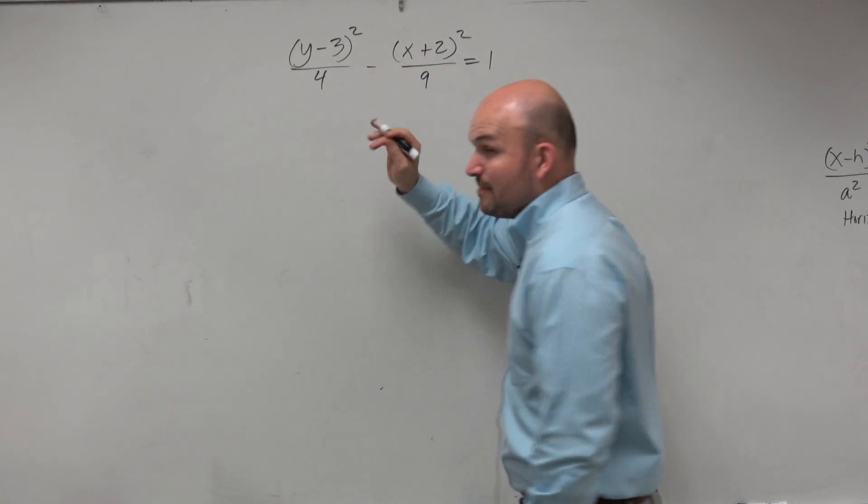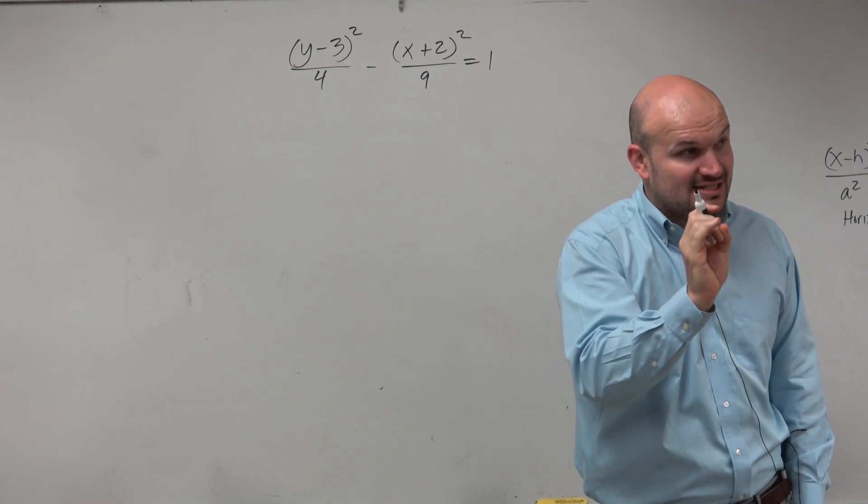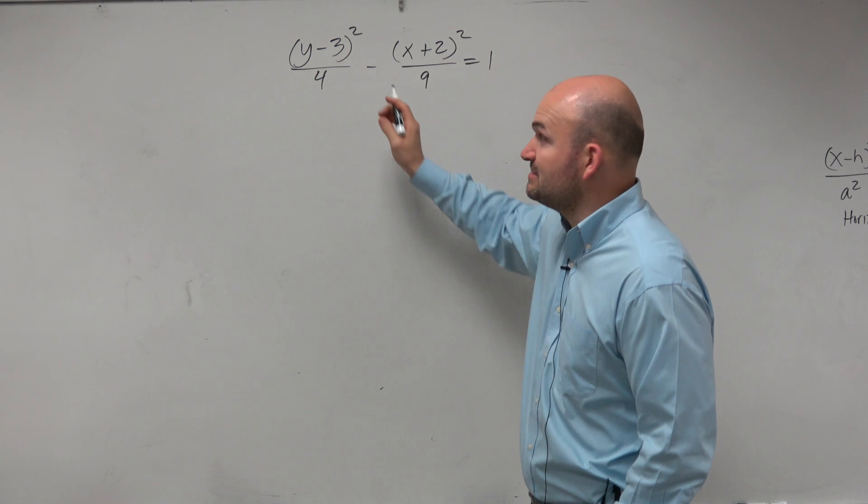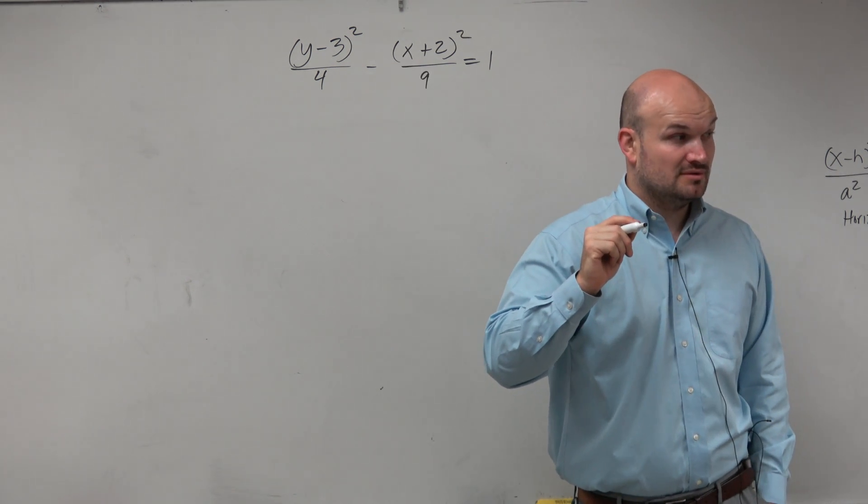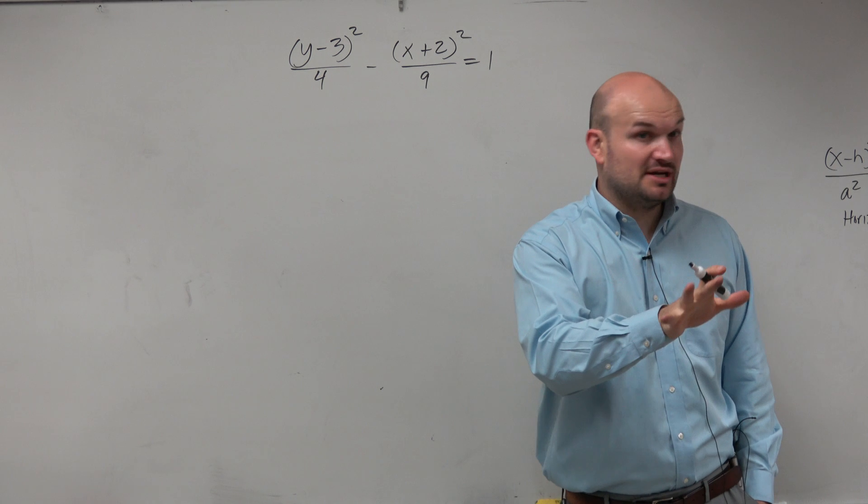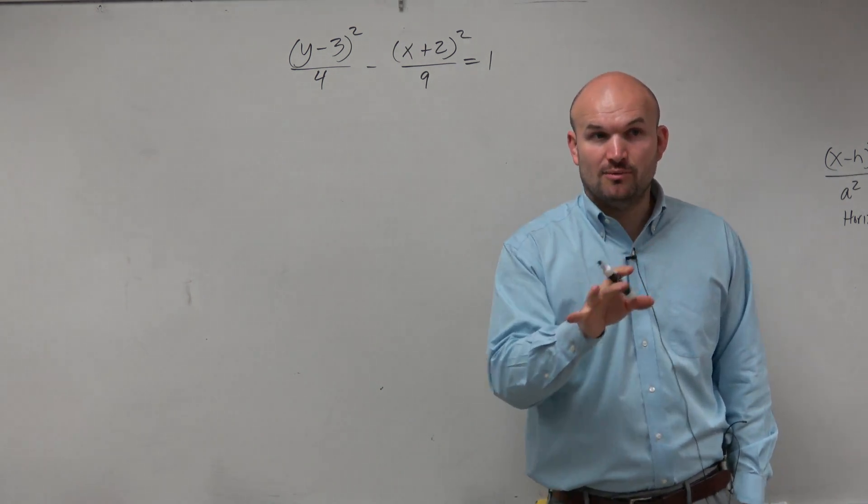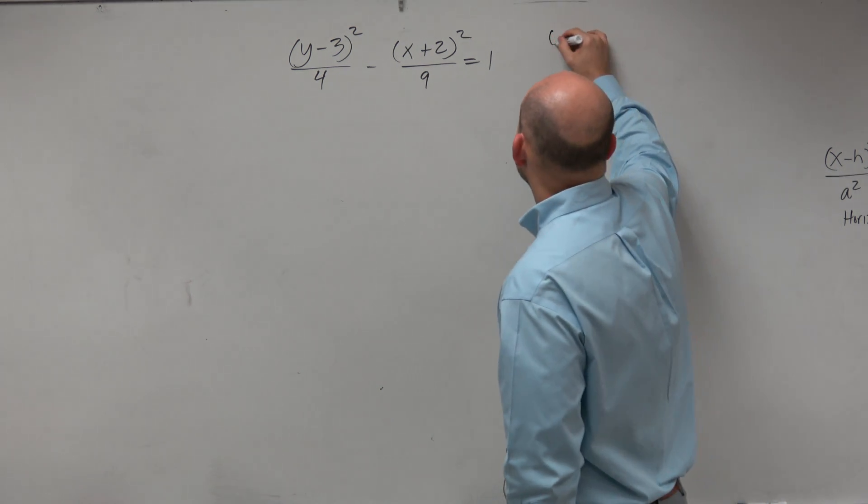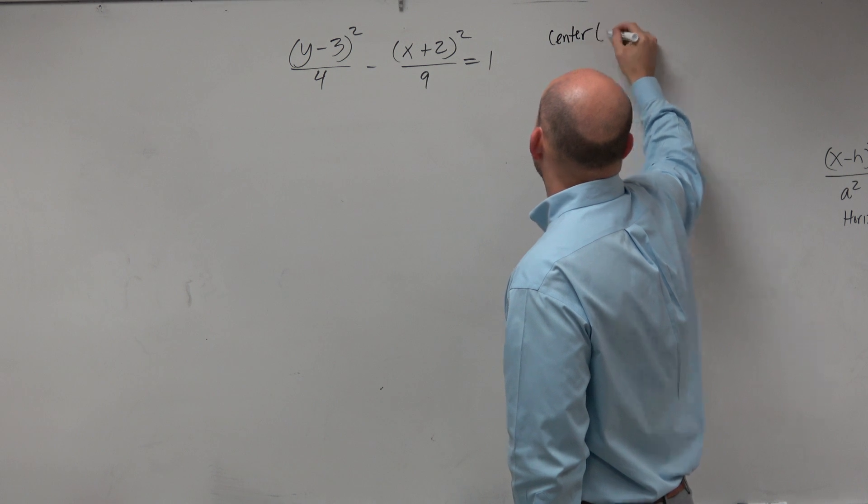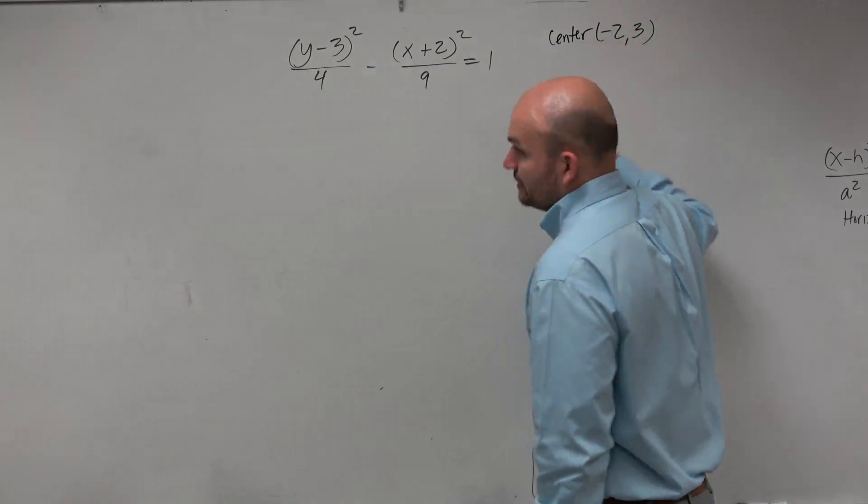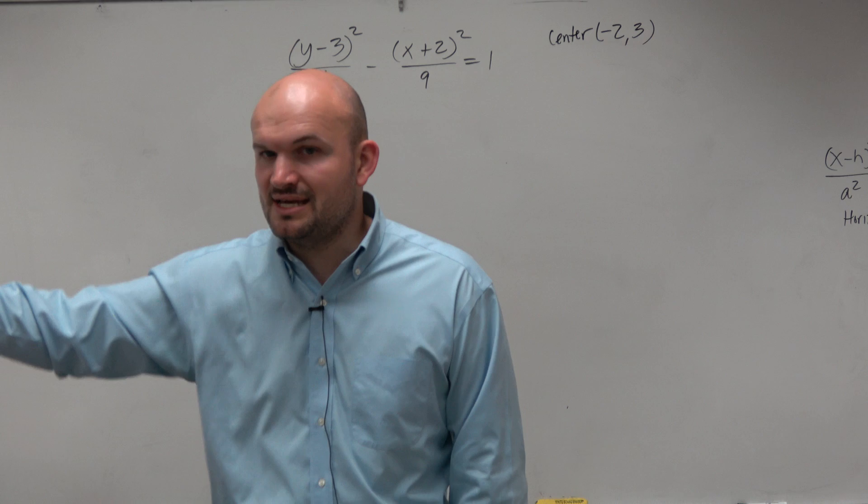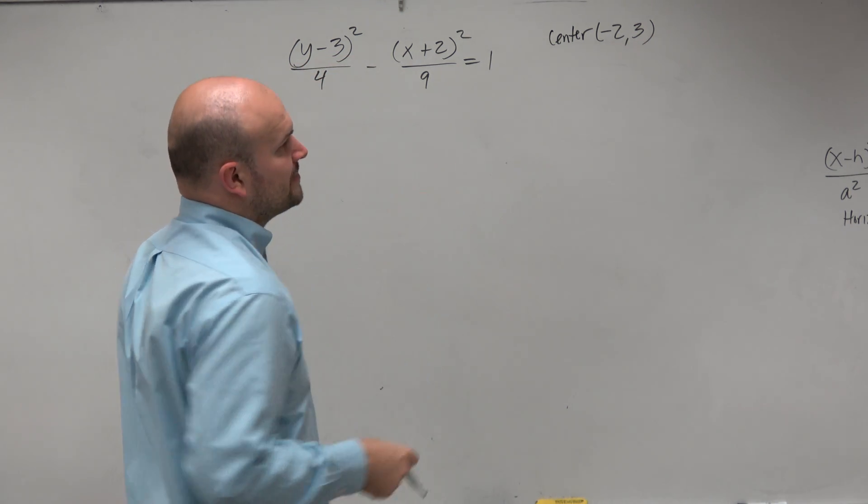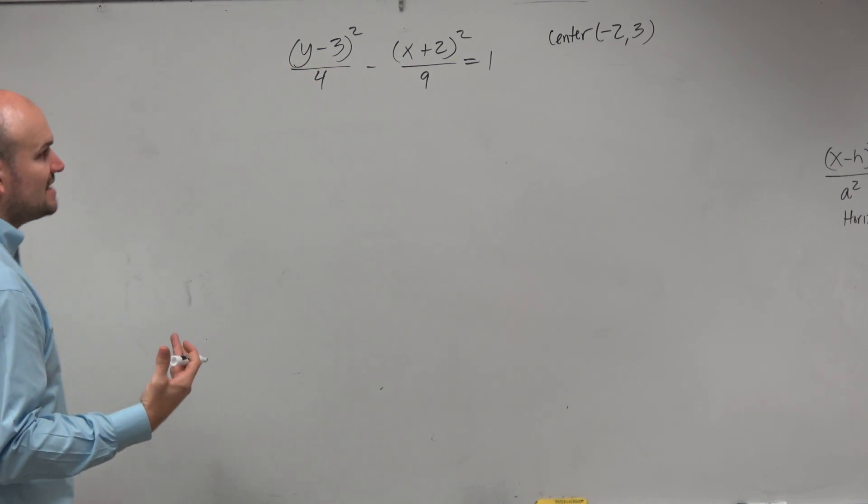So my center is, remember, H is always with X, K is always with Y. Don't make the mistake in saying the center is 3, negative 2. Don't want to make that mistake. It's a very common mistake. I made it too. But don't want to make that mistake. So the center is negative 2, positive 3. It's X minus H, Y minus K. Look at the formulas. It's over there. So we want to make sure we know that center.